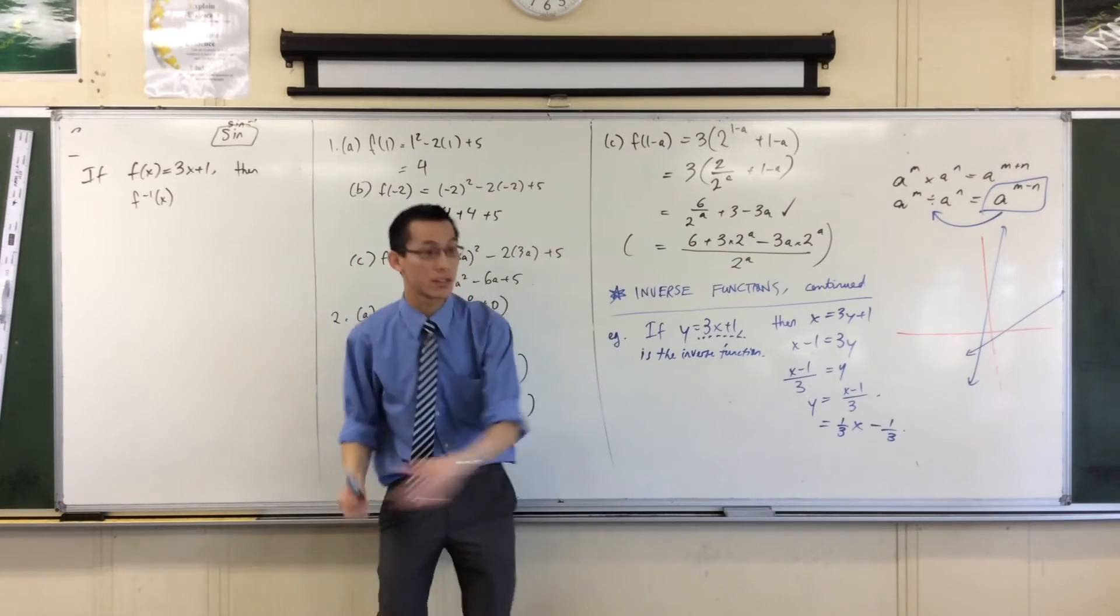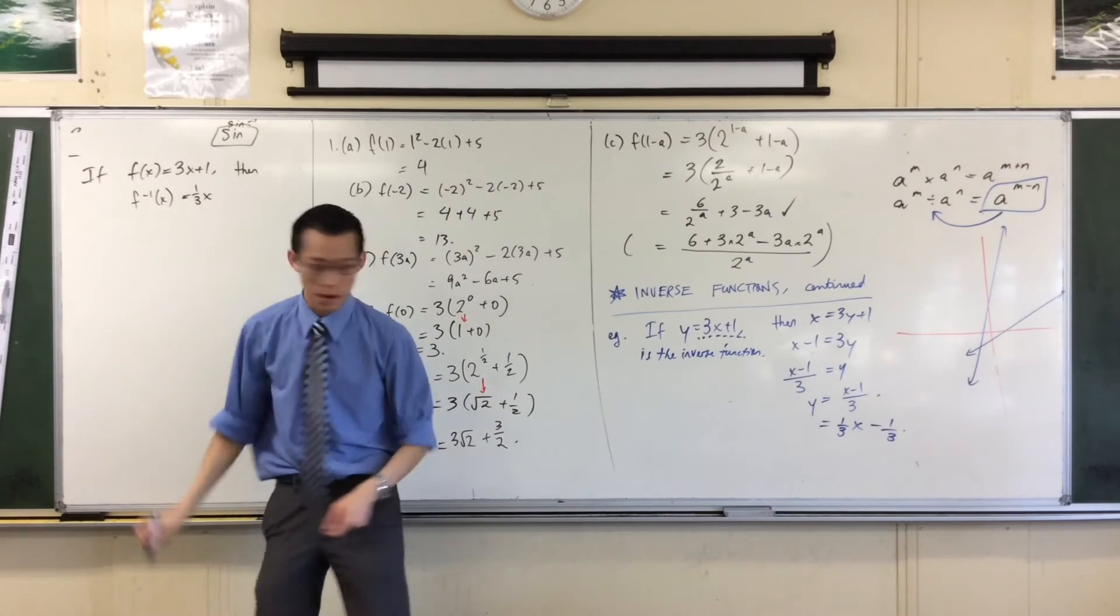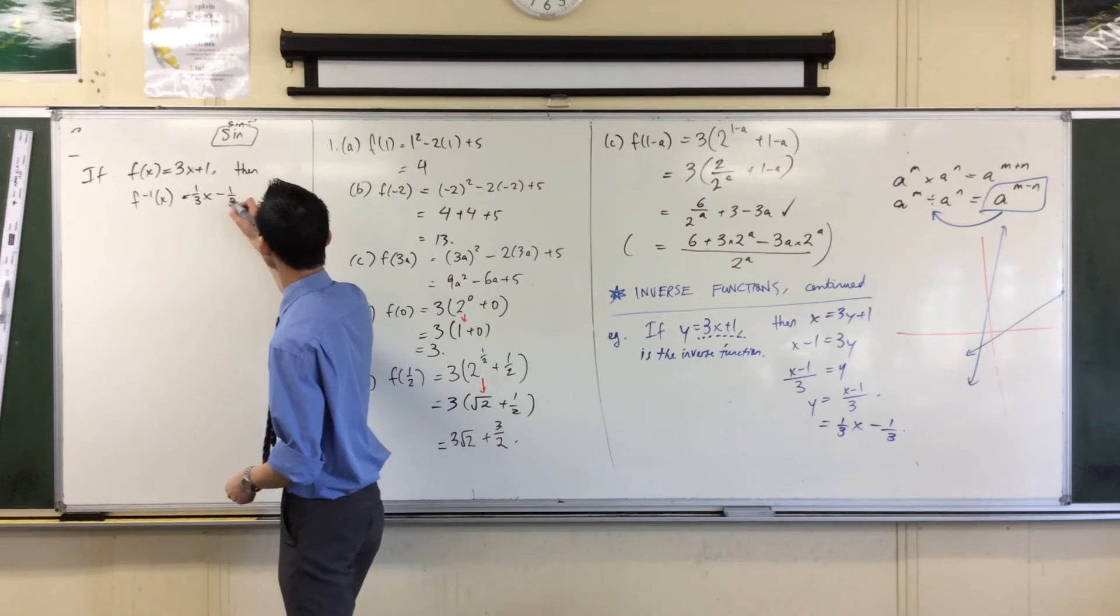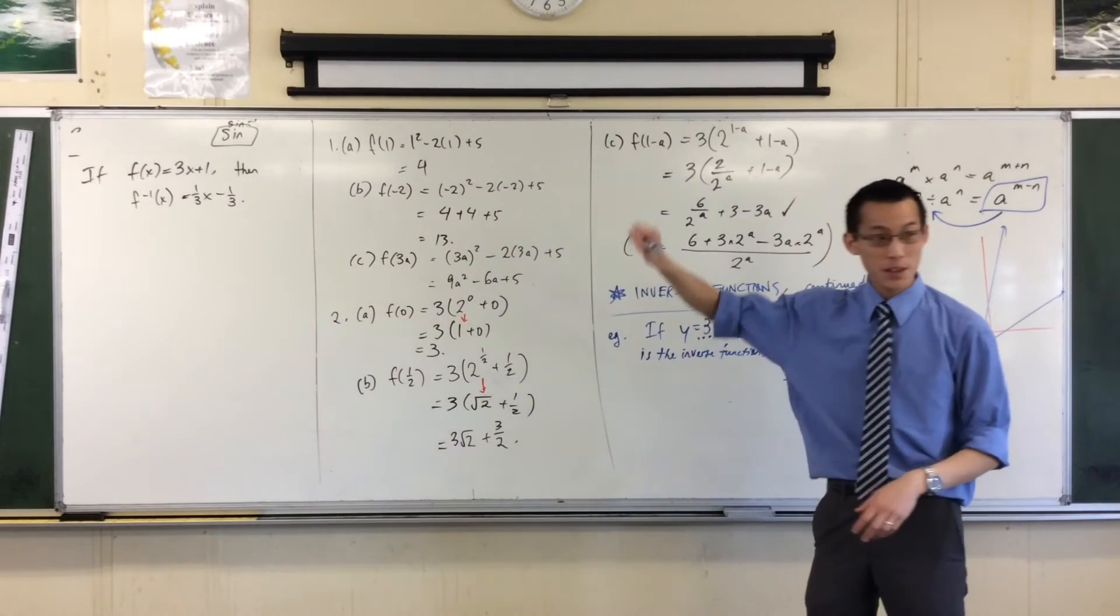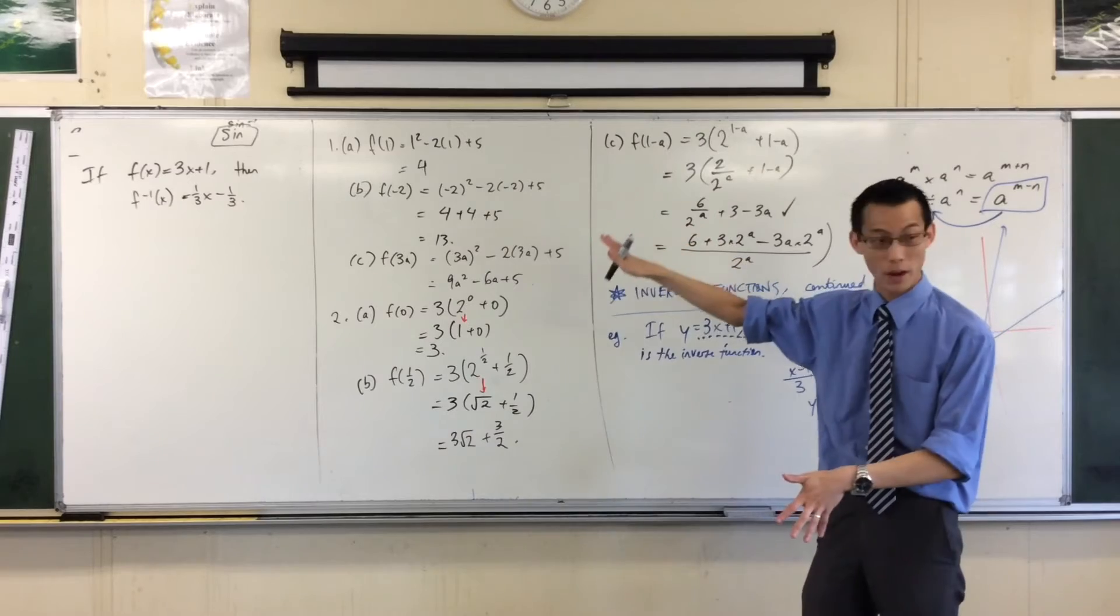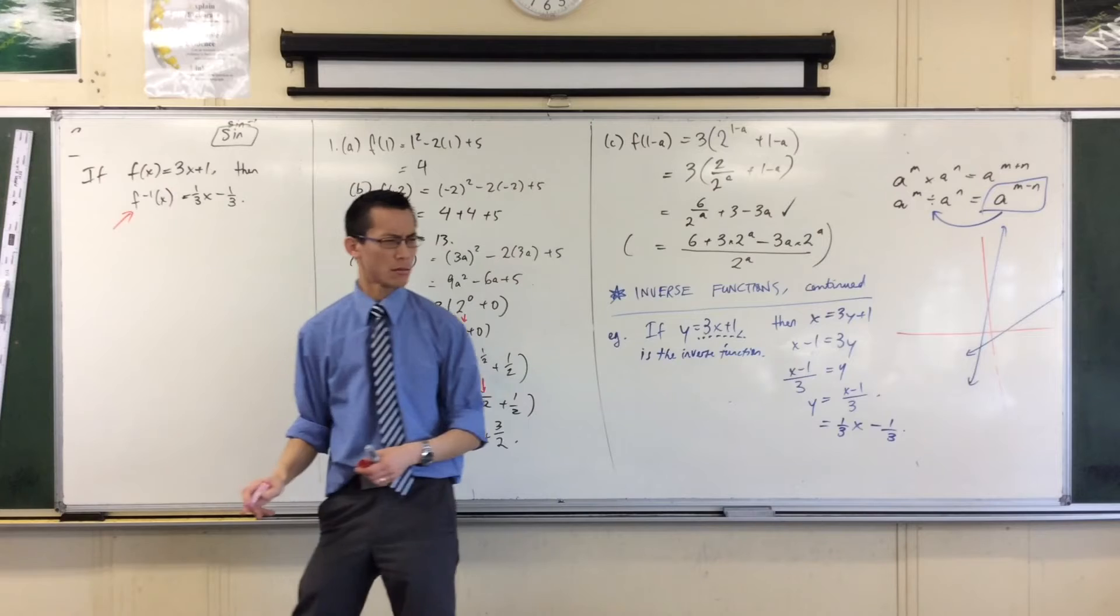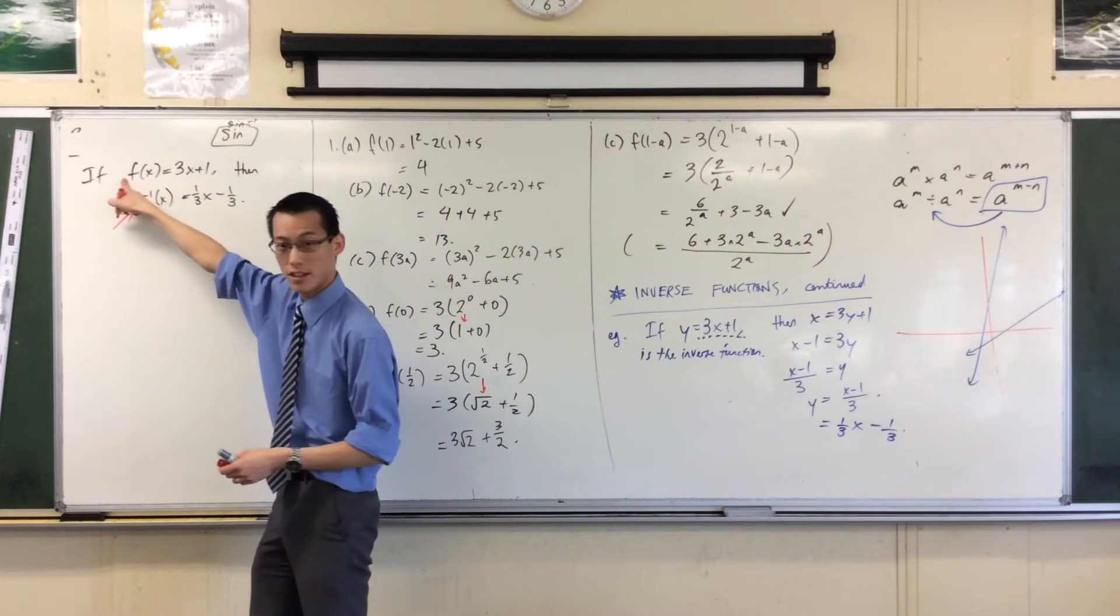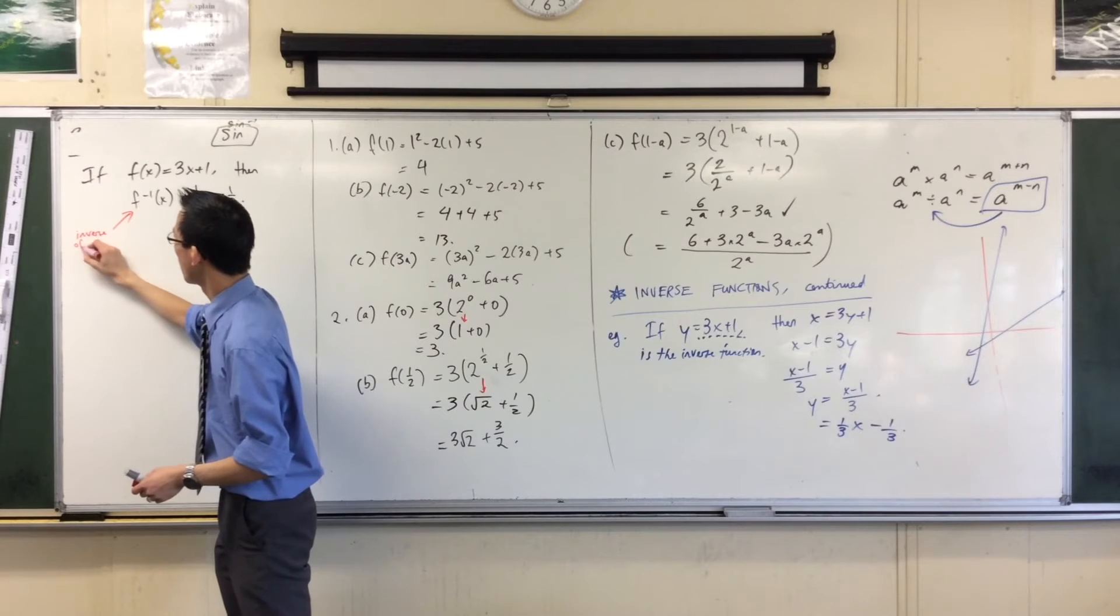And I read this as f inverse. Now, I've already found it. It's right there, so let's just write it down. It's a third x minus a third. Now, the great advantage of using this function notation in this way, and I'll just label that so that in your notes when you come back to this later, you'll be like, oh, what's that referring to? So this is a function, and this is the inverse of that function.